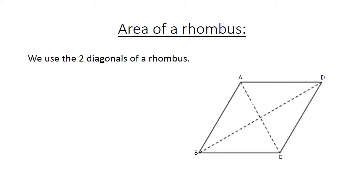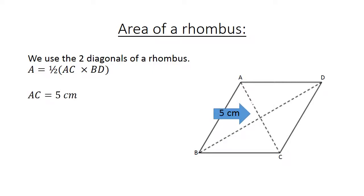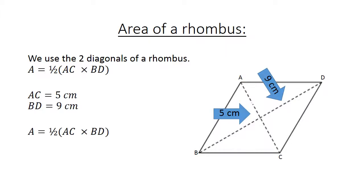Area of a rhombus. We use the two diagonals of a rhombus. Area equals a half in brackets AC times BD. AC equals five centimeters, BD equals nine centimeters. Area equals a half in brackets five centimeters times nine centimeters, equals 22.5 centimeters squared.